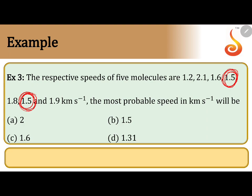If you talk about the probability, then the probability is high for this. So that's why the most probable velocity or the speed that you are going to take here is 1.5. That's the answer.